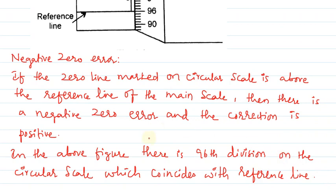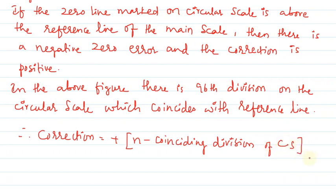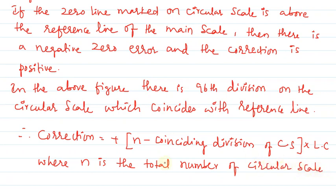Correction is equals to plus (n minus coinciding division of circular scale) into least count, where n is the total number of circular scale divisions.